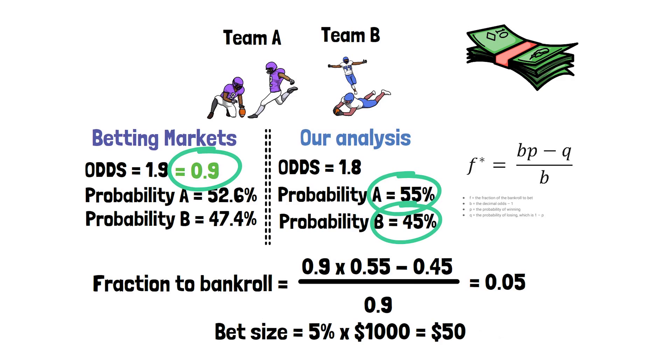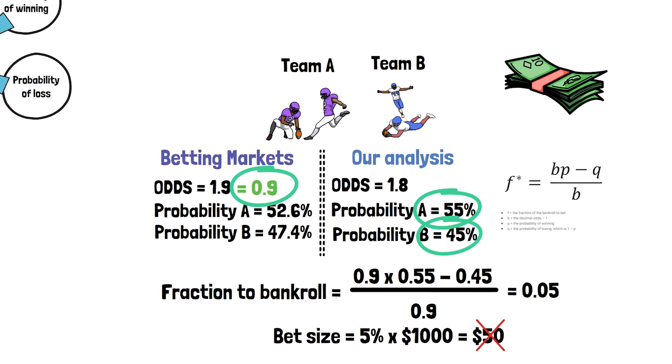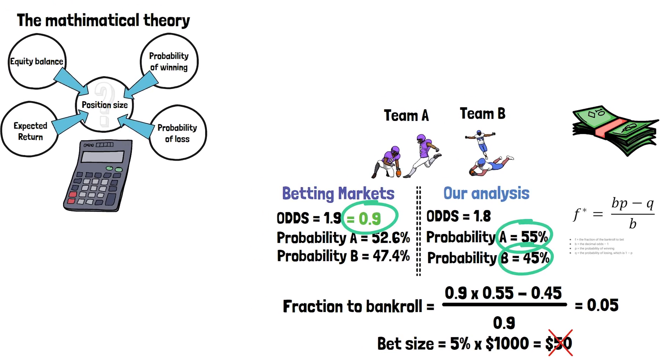This is where it's really important to understand the formula. Had our probability calculations been the same as the market, the Kelly Criterion would have returned a negative number, implying we had no edge. Had we come up with a probability of Team A winning of say 60%, the calculation would have returned an even higher number to reflect the greater edge we had over this event occurring.